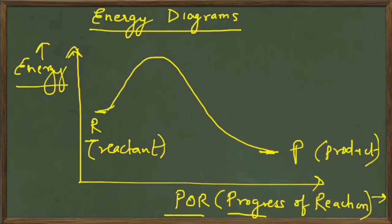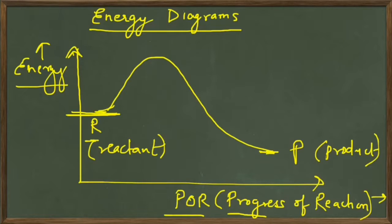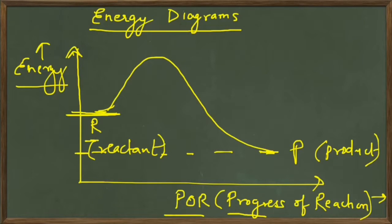The y-axis shows the energy level, so the reactant has an energy level here and the product has an energy level here — which means that the product has less energy compared to the reactant and therefore it is more stable.